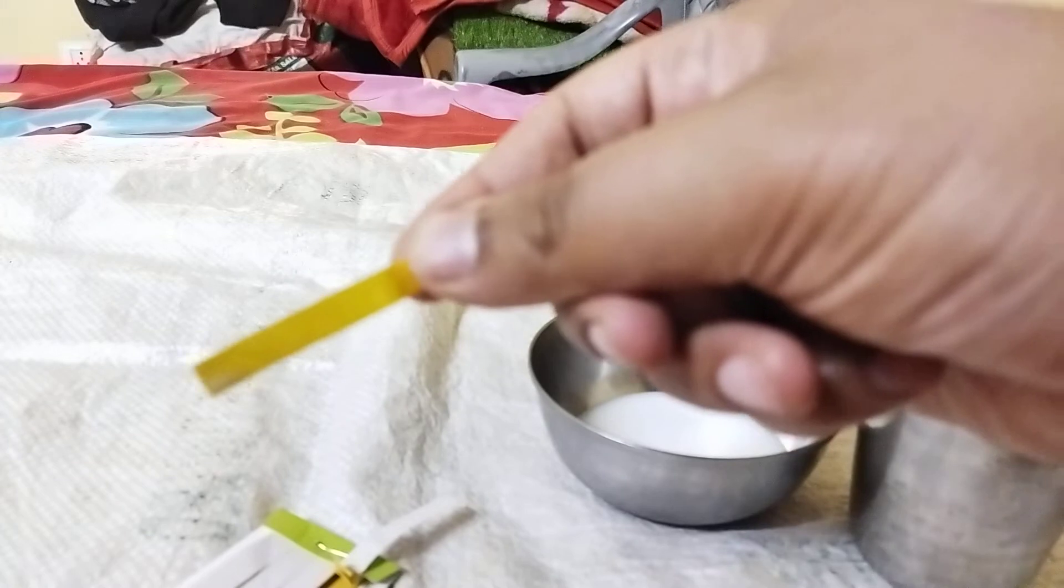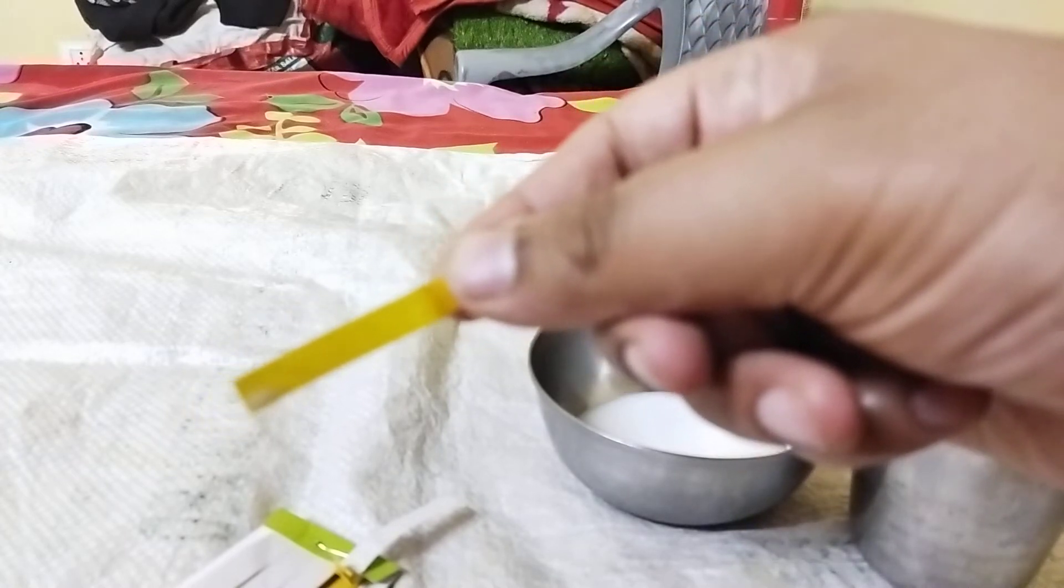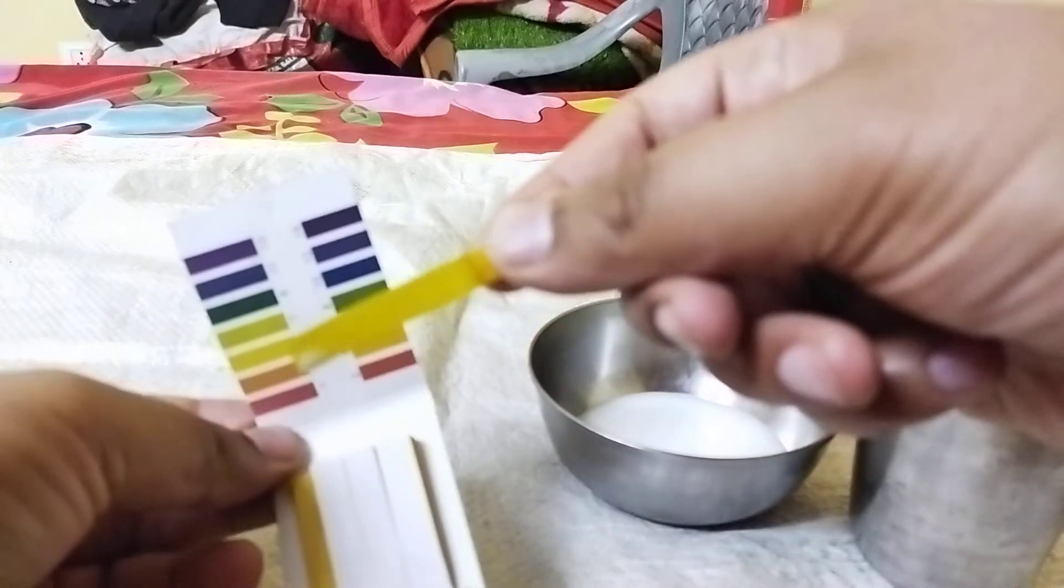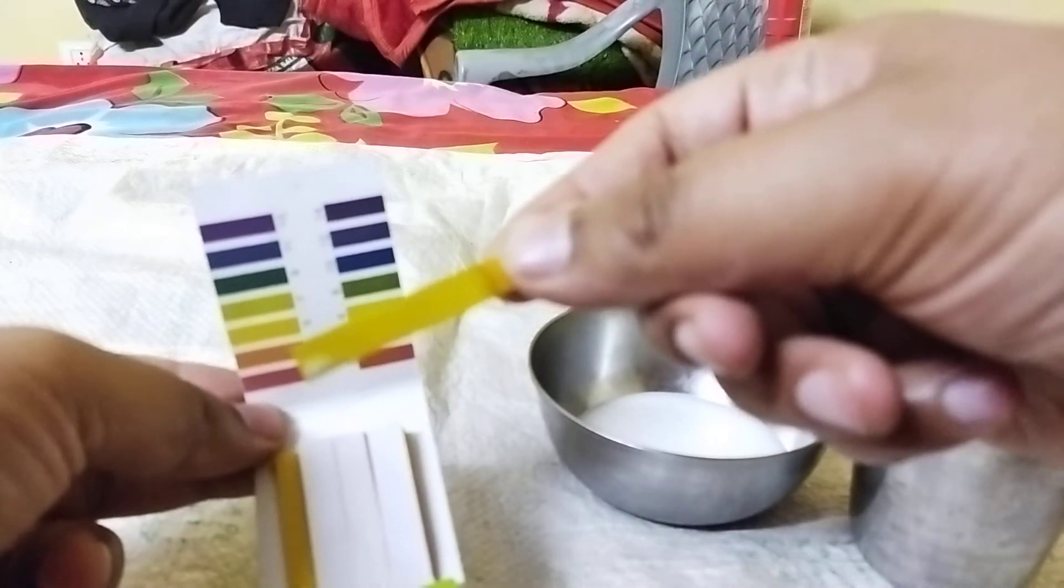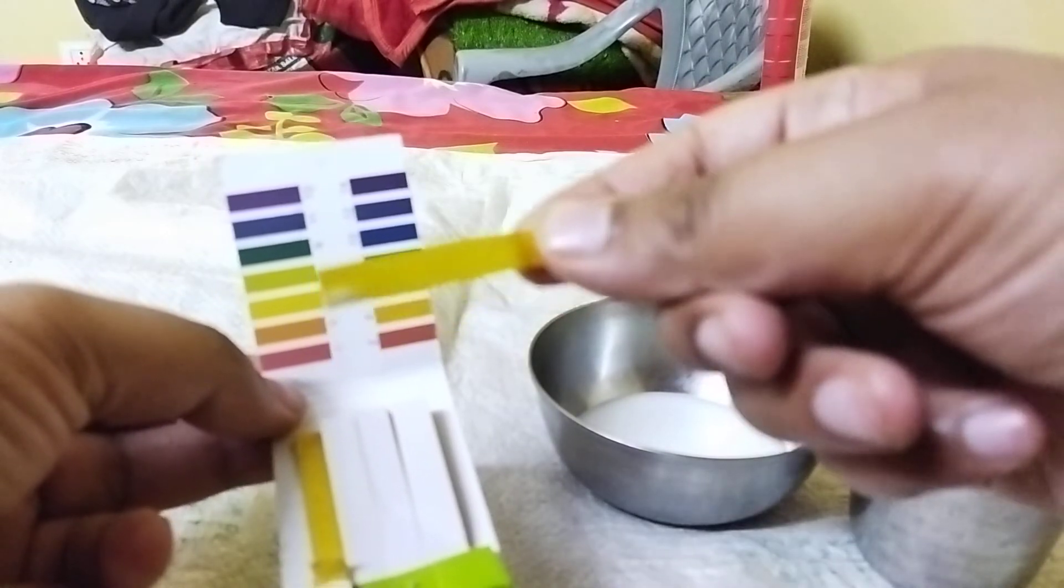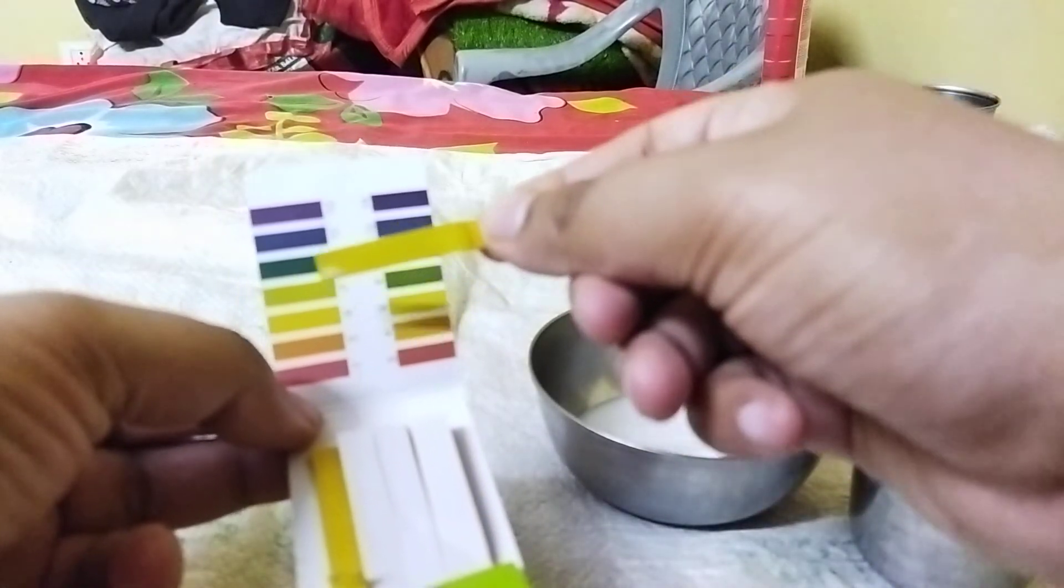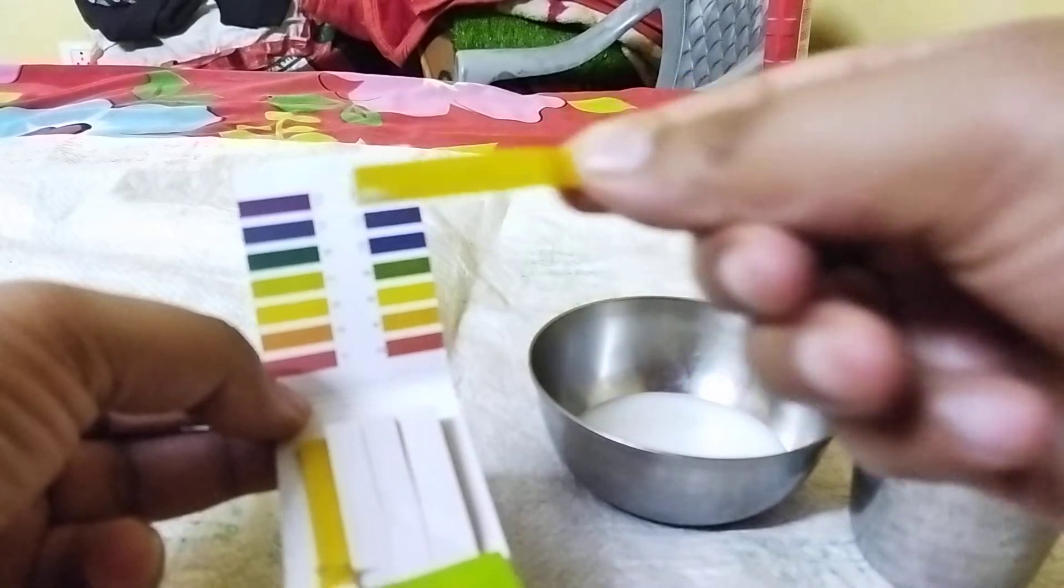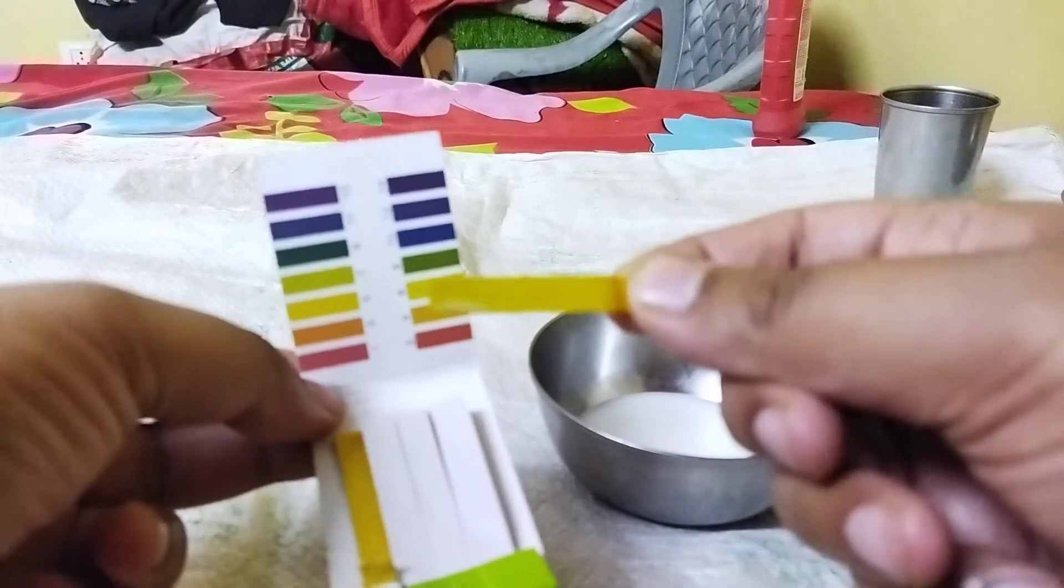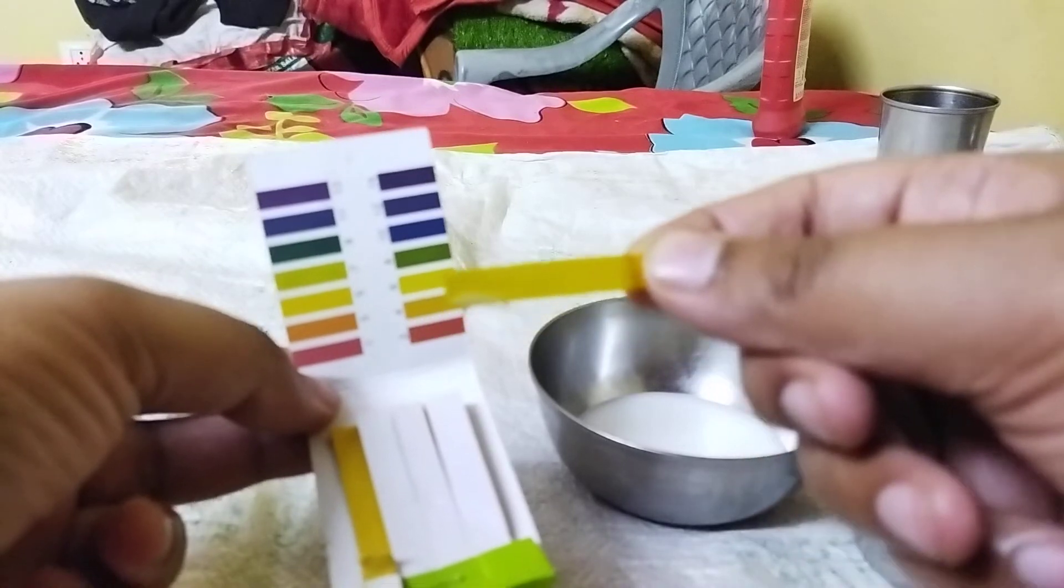It is kind of greenish. If you look at the pH chart, we can conclude that milk is slightly basic in nature. It lies between seven and eight. That's the conclusion of this video, guys. Hope you like it. Thank you.